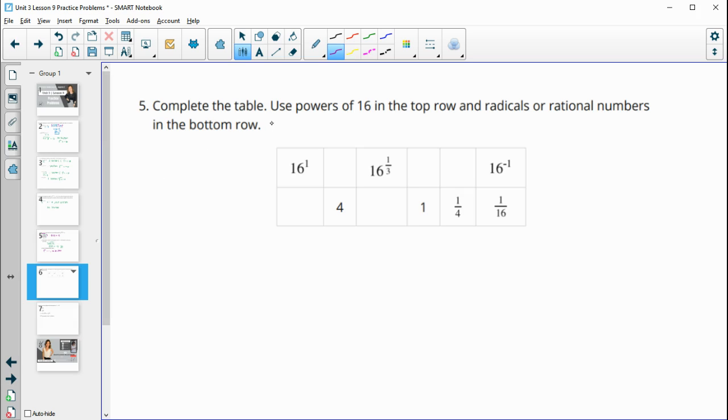Number 5, complete the table using powers of 16 on the top row and radicals or rational numbers in the bottom row. Anything to the first power is just itself, so this is 16. 4 is the square root of 16, and the power for square root is 1 half.